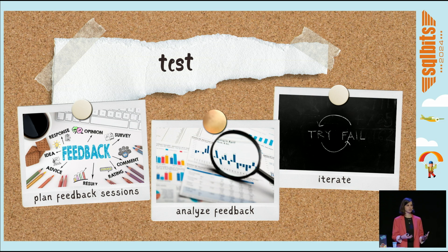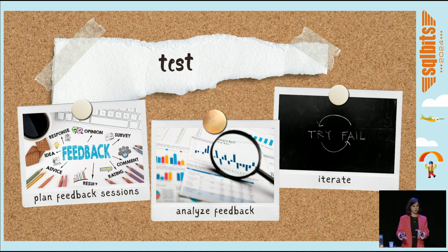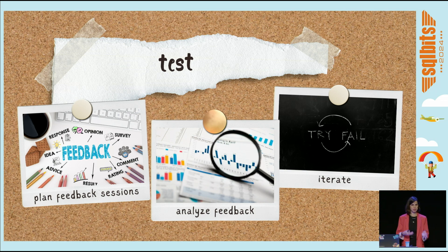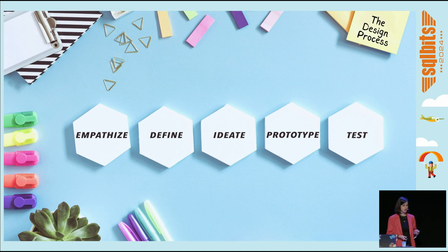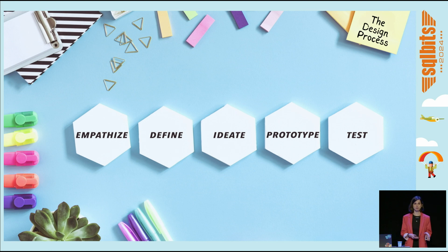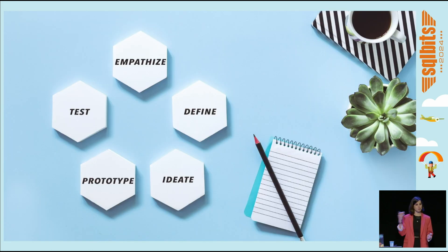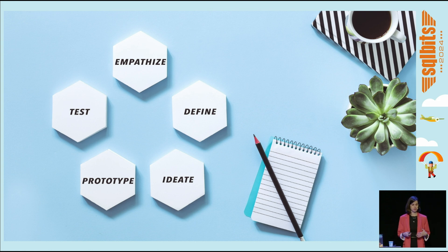Important things like accessibility — or if someone cannot find the back button — you should incorporate this feedback and iterate. Test, feedback, and iterate. This is the whole process: empathize, define, ideate, prototype, and test. But this is not a linear process — it's a circular process. You can always come back to previous stages, and especially once you start testing, it can go back even to the ideate phase, and that's totally fine.